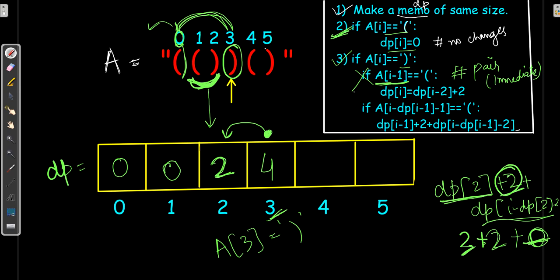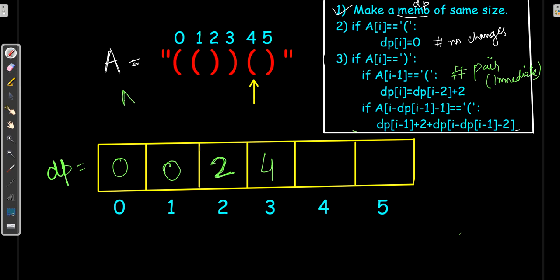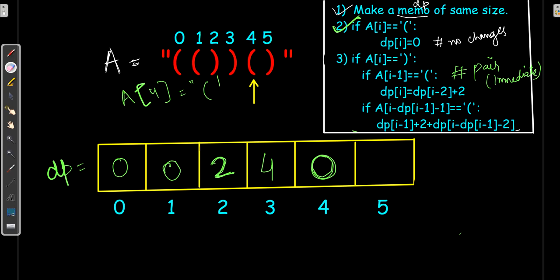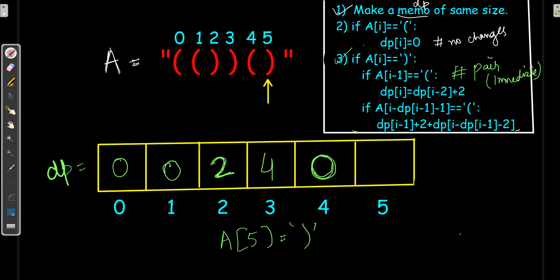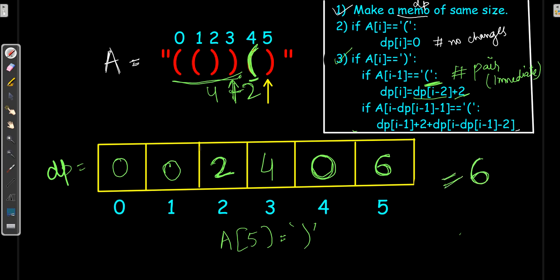Let's continue. At index 4, a[4] is an open brace, so dp[4] = 0. At index 5, a[5] is a close brace. We check a[4] — an open brace — so it's an immediate pair. We take the value two positions before, dp[3] = 4, and add the recent pair value 2, giving dp[5] = 6. So the longest valid parenthesis found is 6.